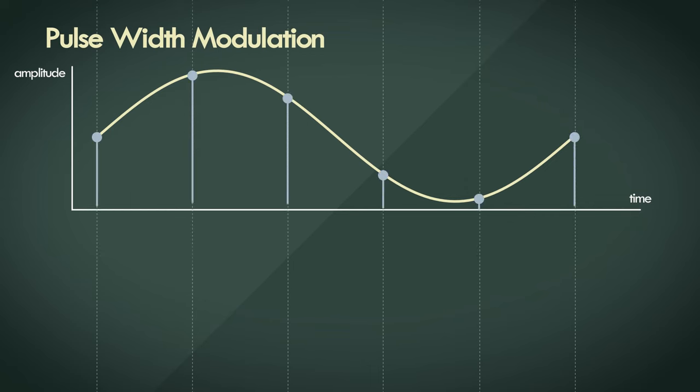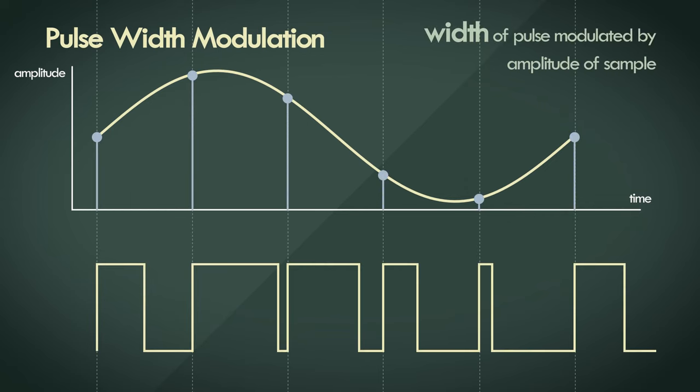Pulse width modulation is an encoding technique where the width of the pulse is determined by the amplitude of the sample. So at each sampling interval, a pulse is triggered with a width correspondingly as large as the amplitude of the sample. The larger the amplitude, the larger the width of the pulse.